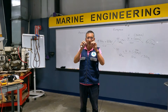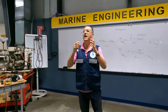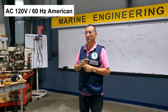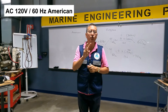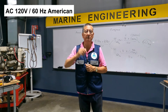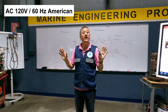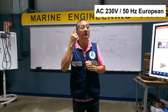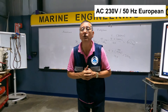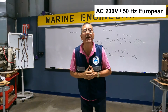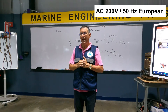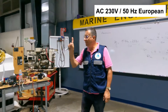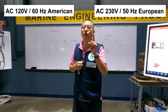Pay attention because this is the most important part. If I have an American single-phase generator, that generator produces 120 volts at 60 Hertz. If I have a European single-phase generator, that generator produces 230 volts at 50 Hertz. The European generator produces 230 volts in one phase; the American generator produces 120 volts in one phase.